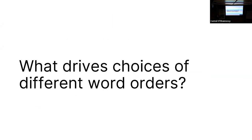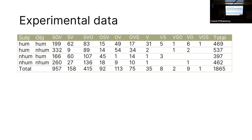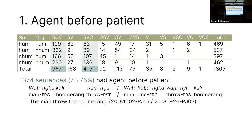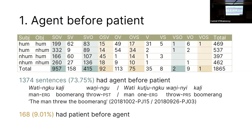What drives choices of different word orders? Generally, the pragmatic factors that people have discussed do hold, but the experimental data allows us to look at what orders people choose outside of any discourse context. Looking at orders according to humanness of subject and object, we distilled four general principles that guide much of this variation. The first is agent before patient: almost three-quarters of sentences had the agent before the patient, as in basic SOV and SVO examples. On the other hand, only 9% of sentences had the patient before the agent.